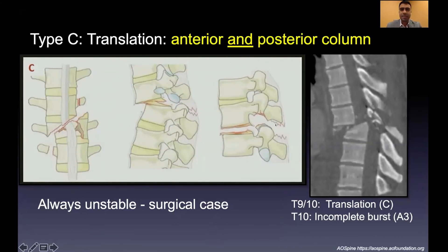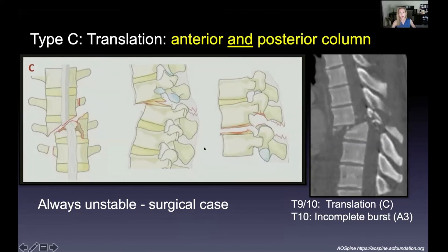Type C injuries are the worst — obviously completely unstable, always needing surgery. This represents complete disruption and dislocation of the spine. When working these up, start from the worst: one bone moving on top of another means everything is disrupted — anterior column, posterior column, all ligaments. These go to surgery immediately because there is always canal compromise and likely cord injury.